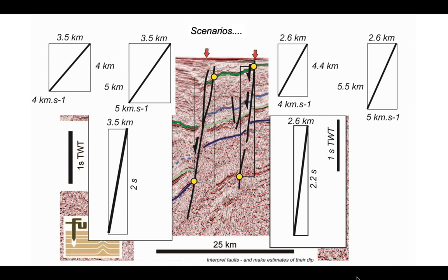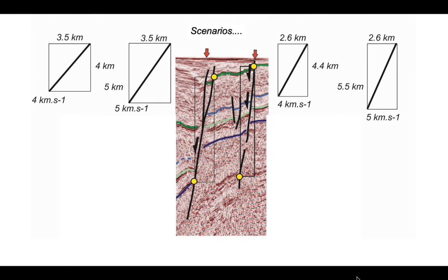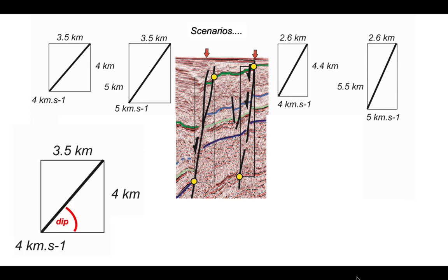So now to calculate the apparent dips of these various scenarios, we need to use some simple trigonometry. Let's do that for the scenario on the left-hand side. A 4 kilometre per second seismic velocity converts our two-way time to 4 kilometres of vertical over a horizontal distance of 3.5, and we want to calculate the dip. The tangent of the dip is simply 4 divided by 3.5, and that works out at 49 degrees. So the apparent dip of our fault plane using that seismic velocity comes out at 49 degrees.